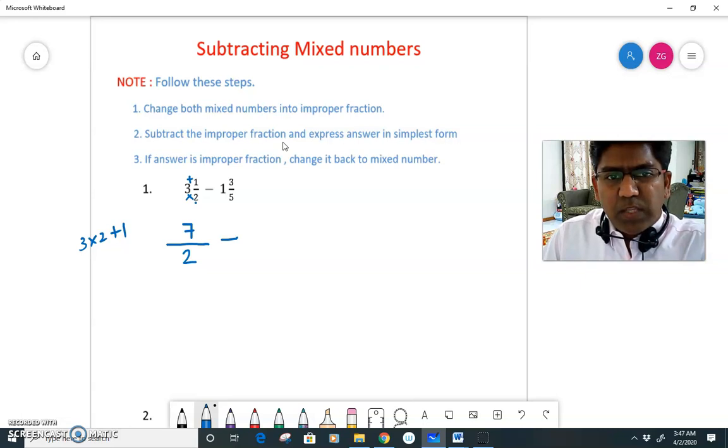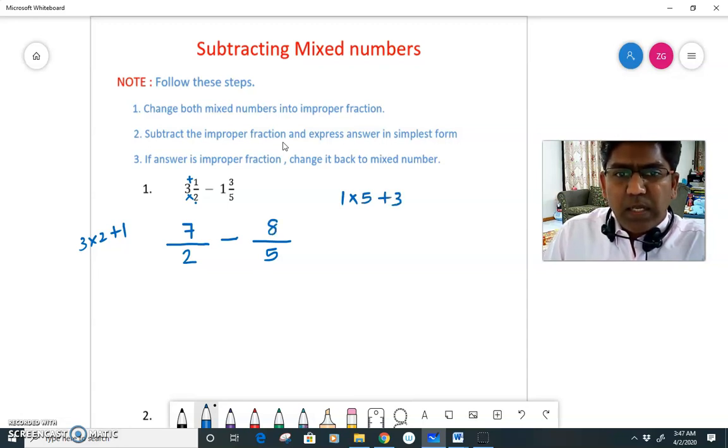The second mixed number 1 3/5, denominator is 5. So I will write here 5. To get the numerator you need to multiply 1 and 5 and add 3. So 1 times 5 plus 3. So I will get here 8/5.